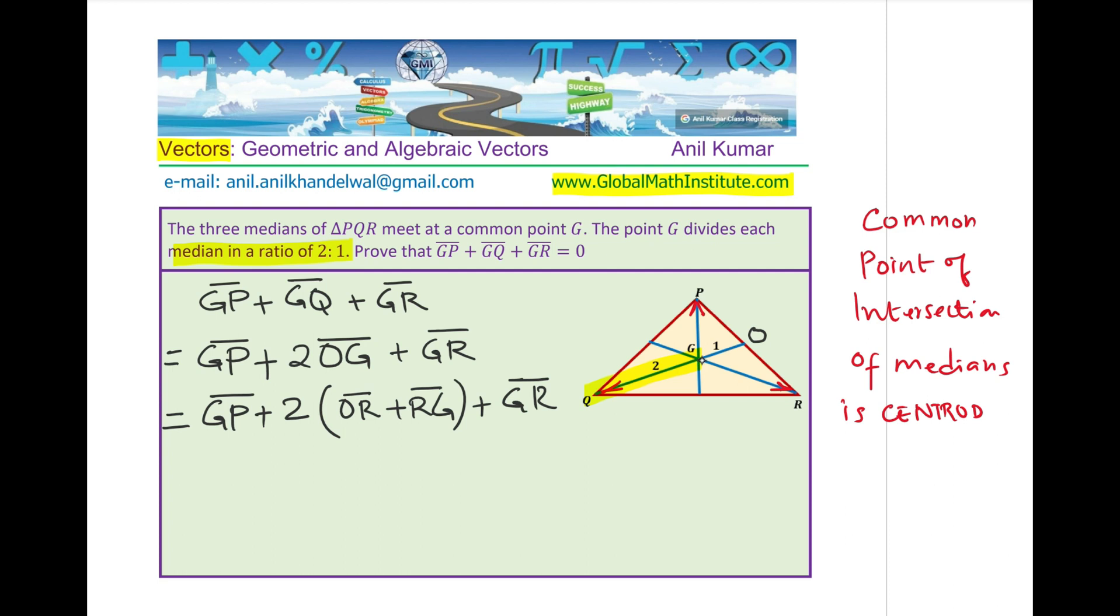O to R is along PR and that is the midpoint. Therefore, these two sides are equal. The ratio is 1 is to 1. If I open the bracket, which is GP plus 2 times OR plus 2 times RG plus GR.